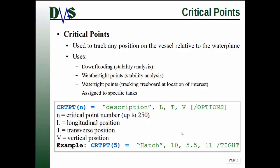And then we have a few options. So these different down flooding analyses are different types of points. That's where the options kick in. I'm not going to go into a whole lot of depth about what the different options do. You can look it up in your GHS reference manual. So here's an example. Critical point number 5 is equal to, I'm telling you it's a hatch. It's at 10 meters aft, 5.5 meters to starboard, and 11 meters above baseline. And I've specified an option here that it's a tight critical point, meaning it's a weather-tight point.